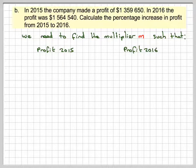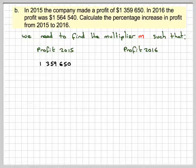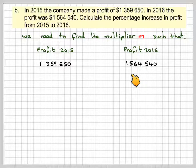This one goes here, so it's 1,359,650. And then this one goes here, 1,564,540.